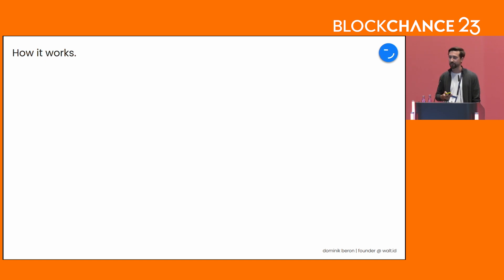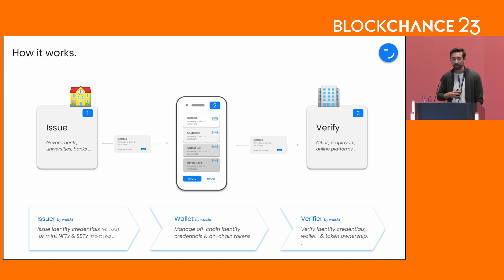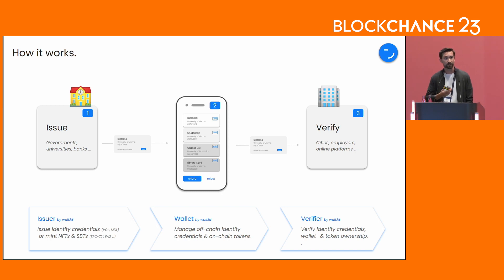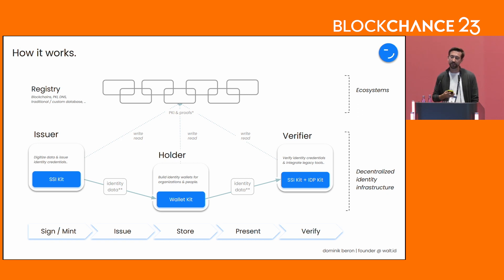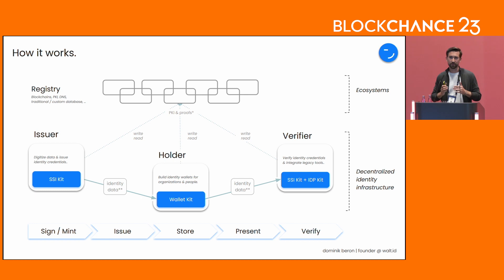So how does it work? Every use case, regardless of the industry, always has three different roles. There's always three different parties: the data sources — the so-called issuers, which you can see on the left-hand side — which have data about you. Instead of issuing physical cards, they issue digital and signed credentials to your identity applications, your wallets, with which you can easily share that information with anybody to quickly use products and services online. It can be cities, employers, or online platforms. This is a more technical view where you can clearly see that everything related to blockchain on top is really just the ecosystem establishing a single source of truth for certain information like public keys, and then below — completely decoupled from that — the decentralized identity infrastructure that's integrated into the enterprise tools we have today.